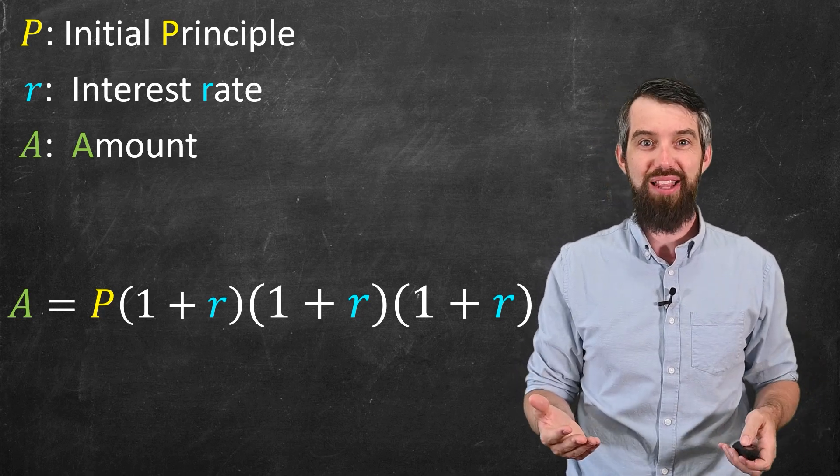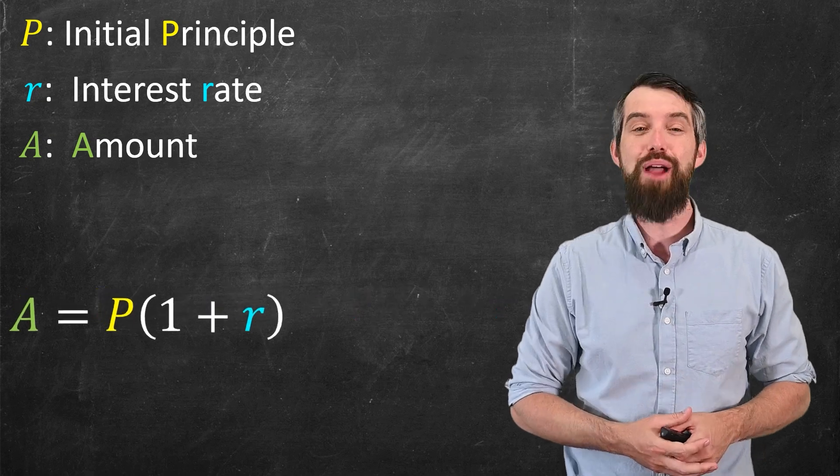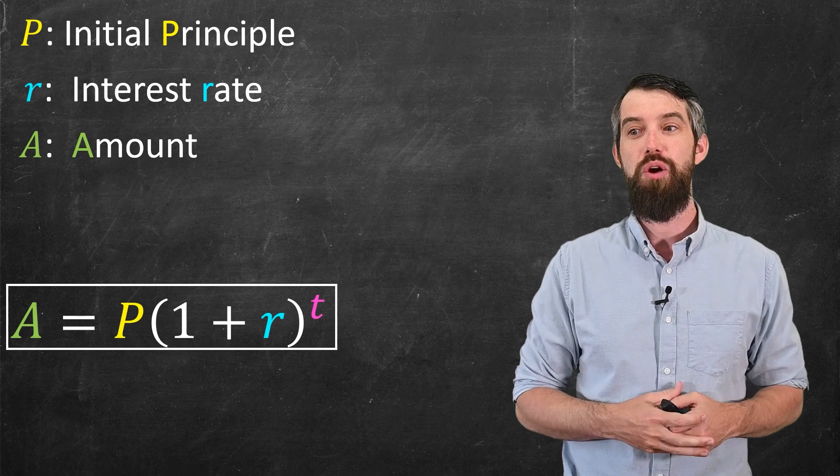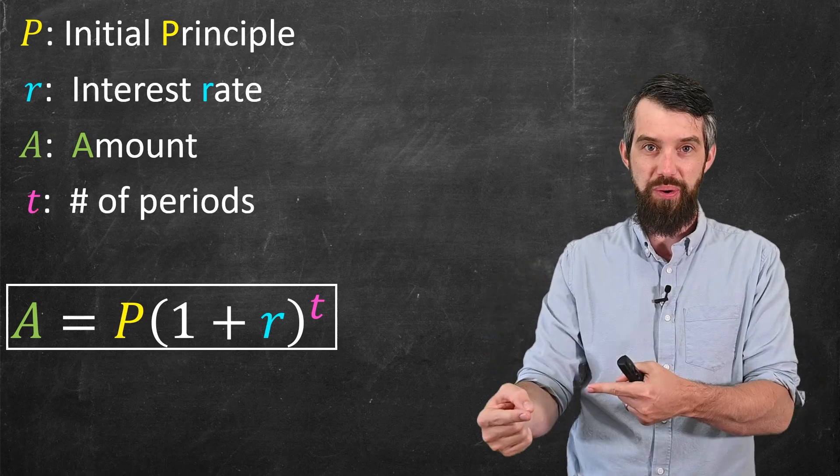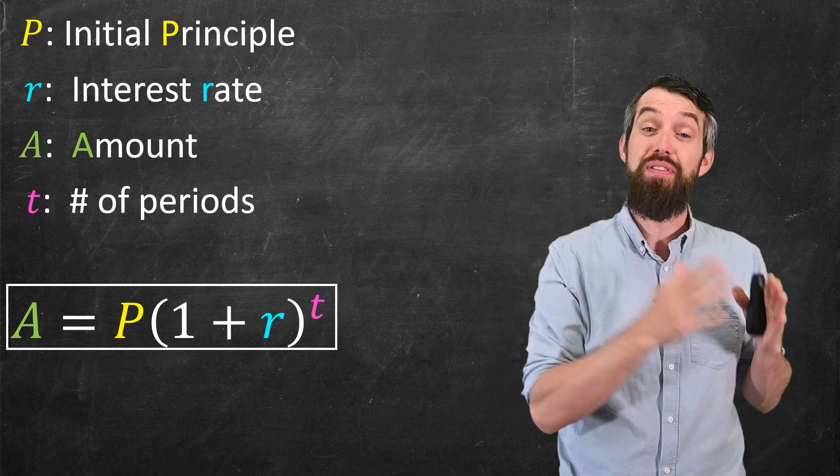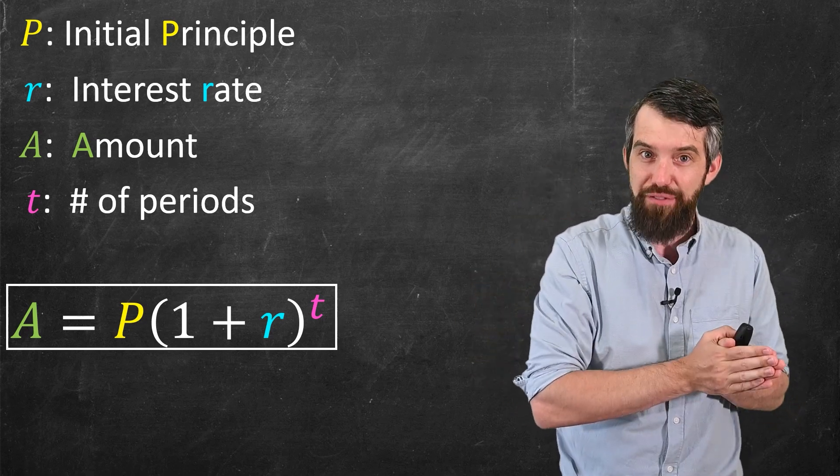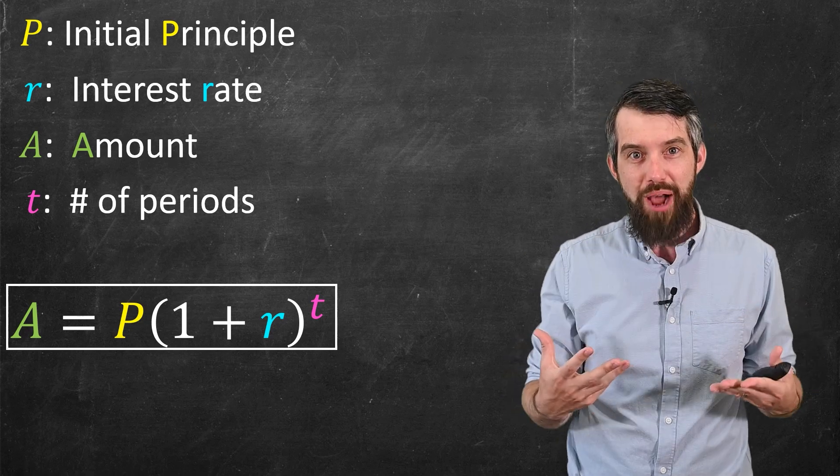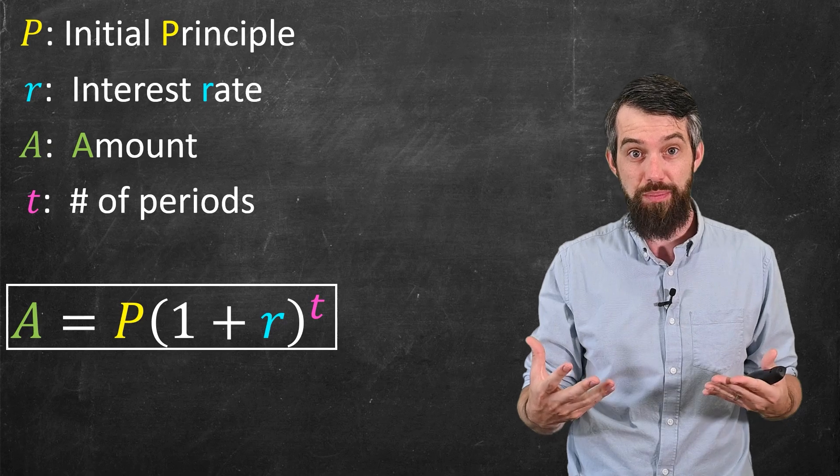And if I want to do this in generality, for a general T, I would say this is P times 1 plus R to the power of T, where T was the number of periods. Now, the fact that the T is now an exponent, previously for simple interest it was a multiplicative factor, now the T is an exponent. That is going to make compound interest grow faster. Let's see why.